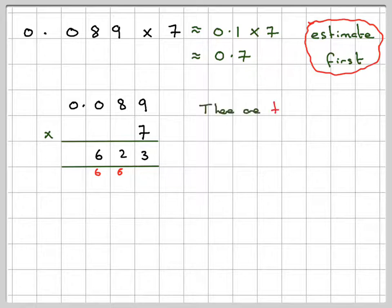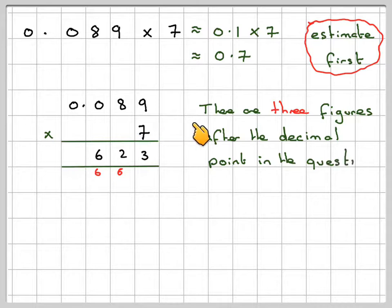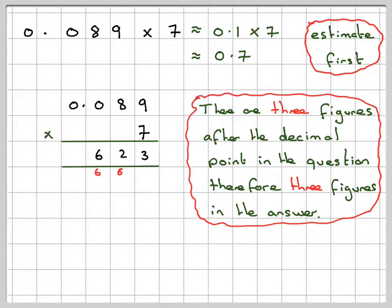And then we have 3 figures. So the point is going further because 7 times 0 is 0. So there are 3 figures after the decimal point in the question, therefore 3 figures in the answer.